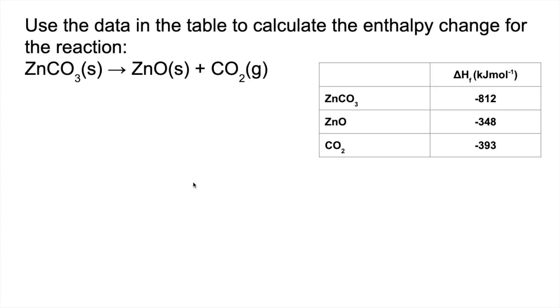So we'll put that into practice now for this question here. Use the data in the table to calculate the enthalpy change for the reaction: ZnCO3 solid going to ZnO solid plus CO2 gas. You can see clearly in the table these are enthalpy changes of formation. So that's a sign that you're going to use the formation cycle method. If you want to pause the video, have a go, and then play on for the answer.